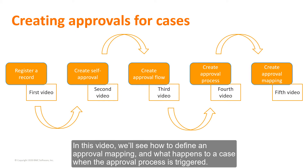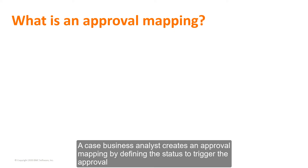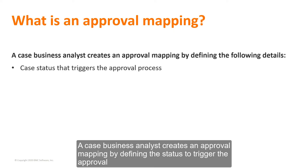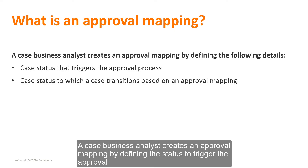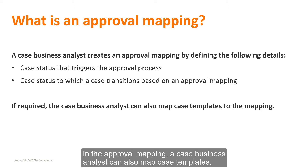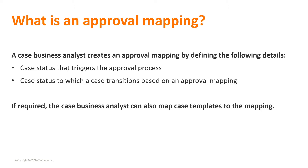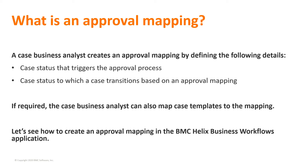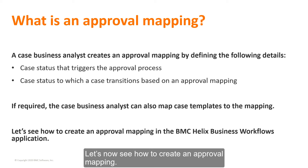In this video, we'll see how to define an approval mapping and what happens to a case when the approval process is triggered. A case business analyst creates an approval mapping by defining the status to trigger the approval, and the status to which a case changes after an approver's action. In the approval mapping, a case business analyst can also map case templates. Let's now see how to create an approval mapping.